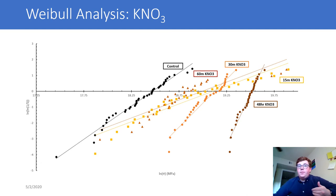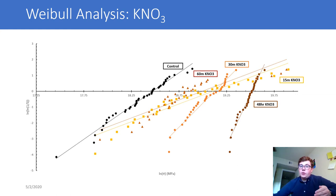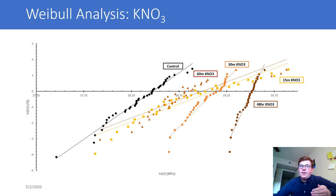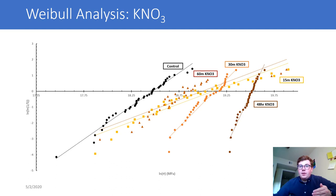With the potassium samples, we see quite significant differences from the control. The 48-hour potassium had both the highest theoretical strength — the highest X-axis intersection — and the highest Weibull modulus. The 15, 30, and 60-minute samples remained relatively close to the control, showing no substantial strengthening. However, the 48-hour sample had enough time to produce measurable strengthening of the material and also showed greater consistency.